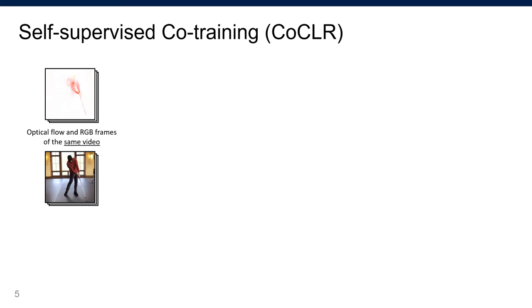To utilize this property, we propose CoCLR. We co-train two networks by alternatively using one space to help the other space.